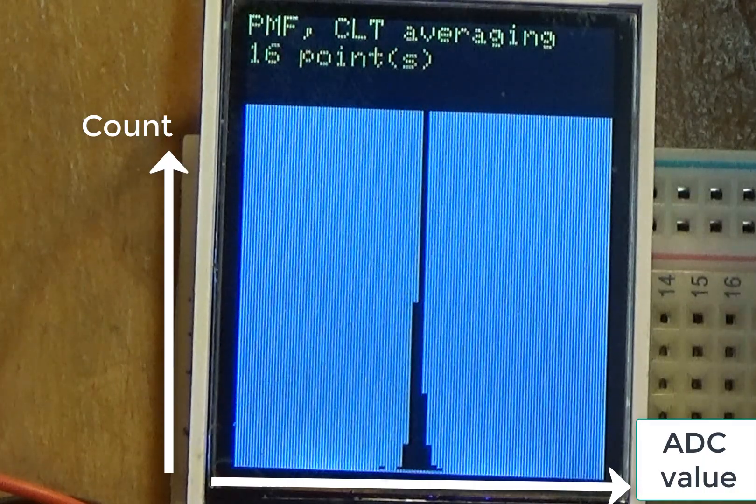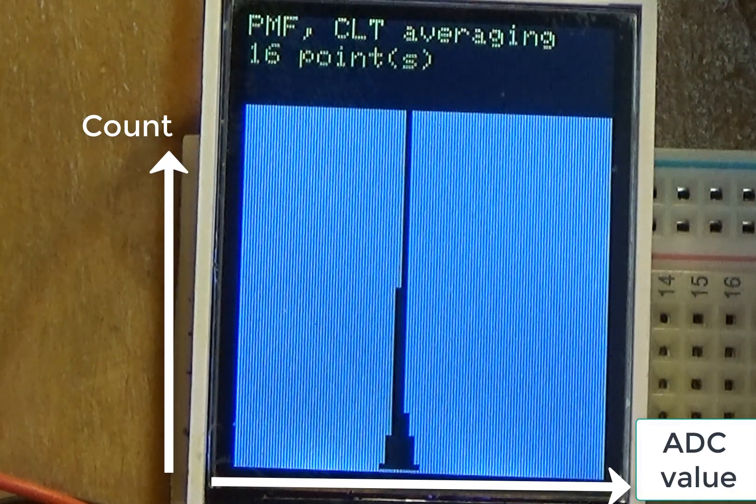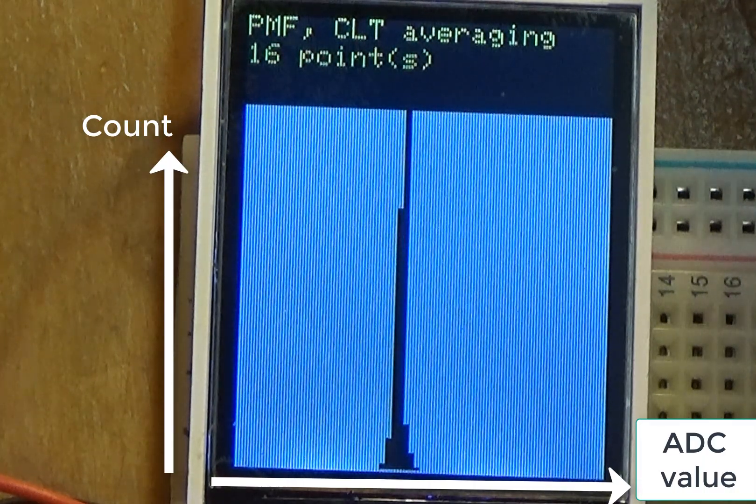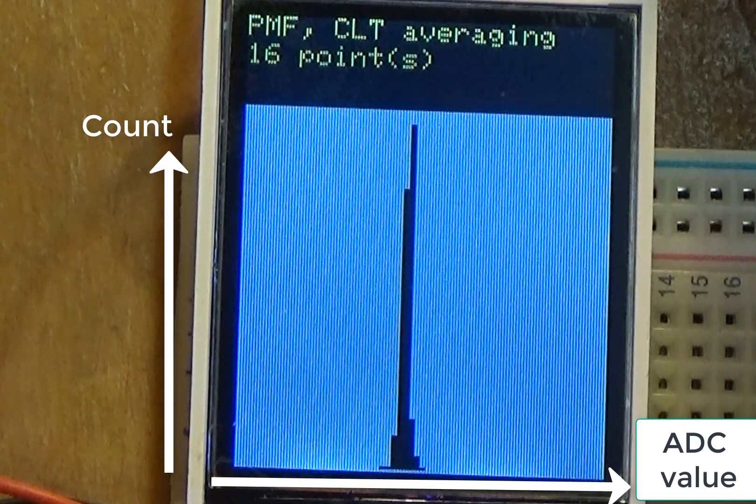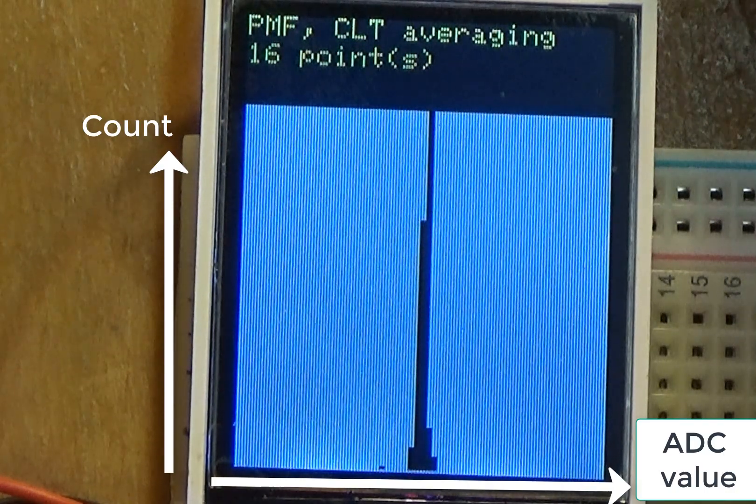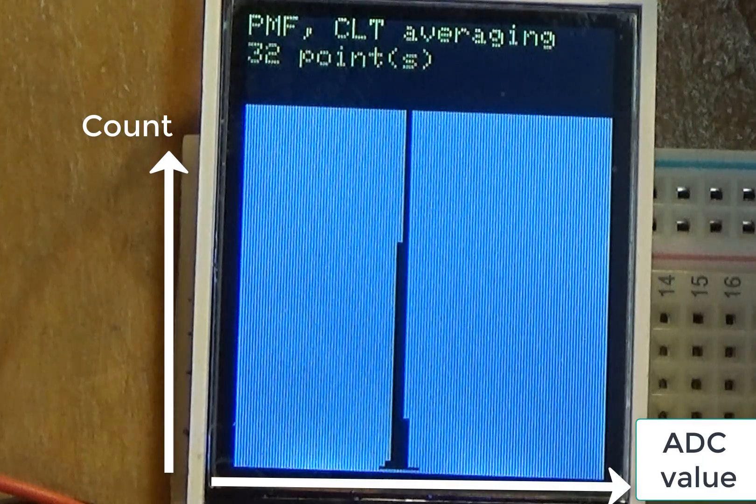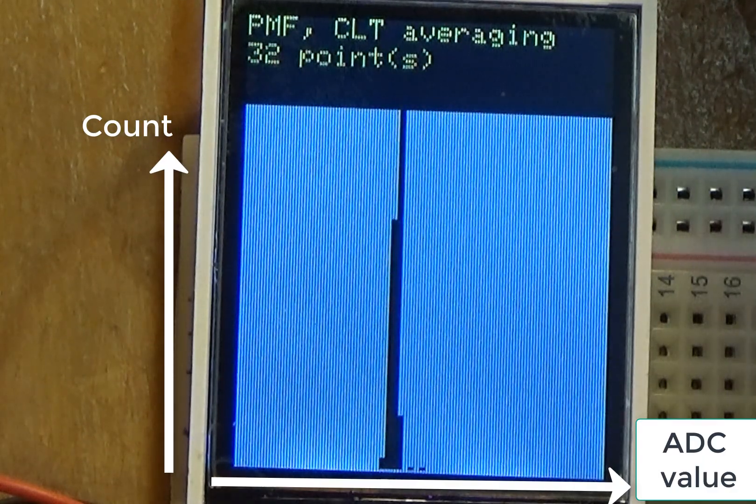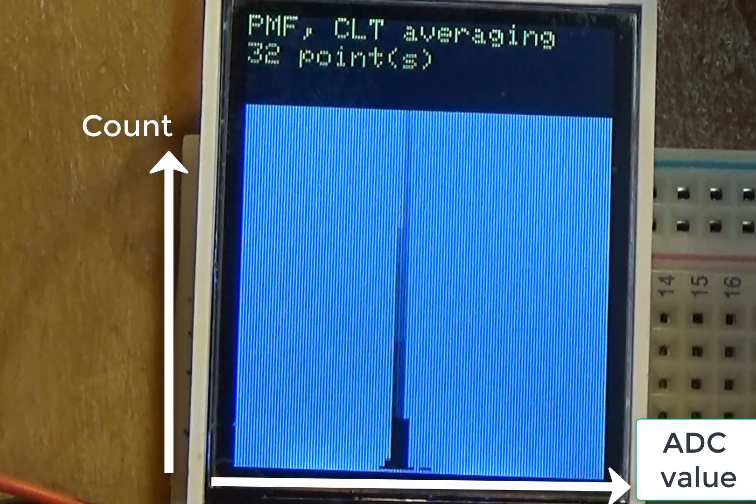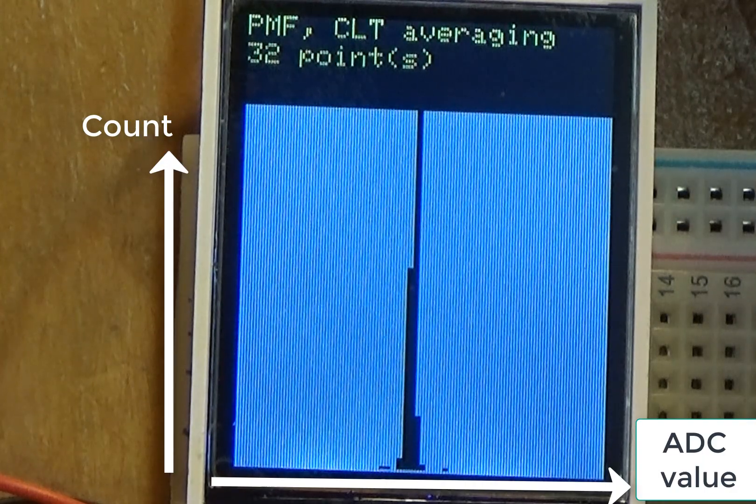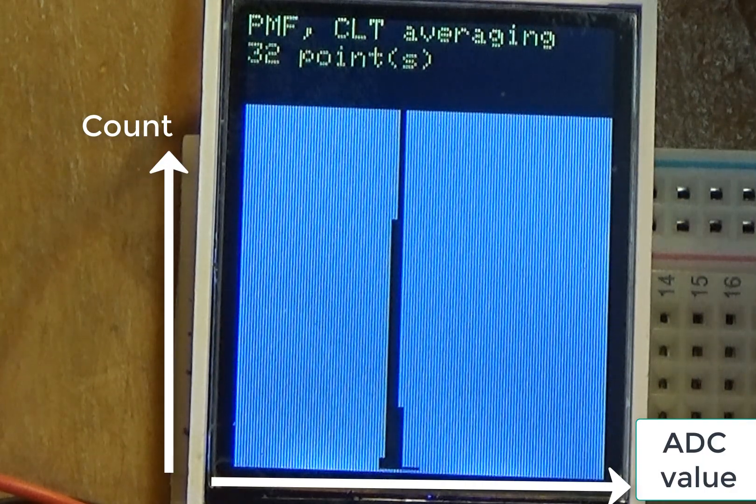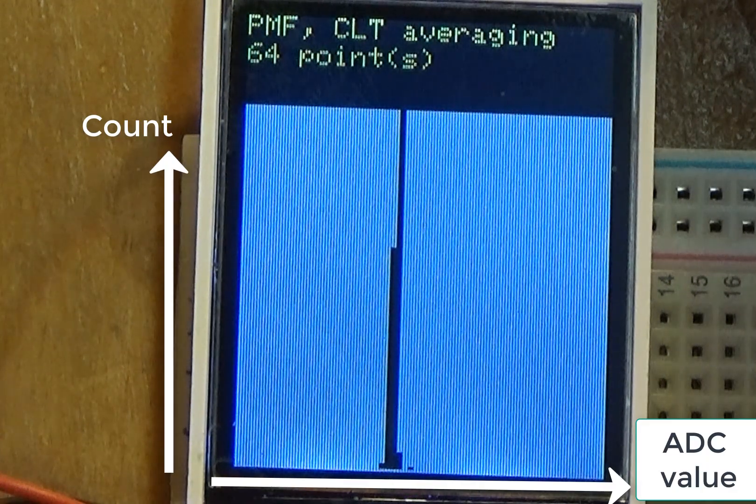Again, there's a cost to that. It takes 16 times the amount of power, it takes 16 times as long to do it, but the shape of this waveform, it becomes Gaussian, it becomes normal, and that the standard deviation, or the spread of this, becomes shorter, so the amount of noise in the signal goes way down. If I hardware average, you can see, it's almost straight up with a single point.